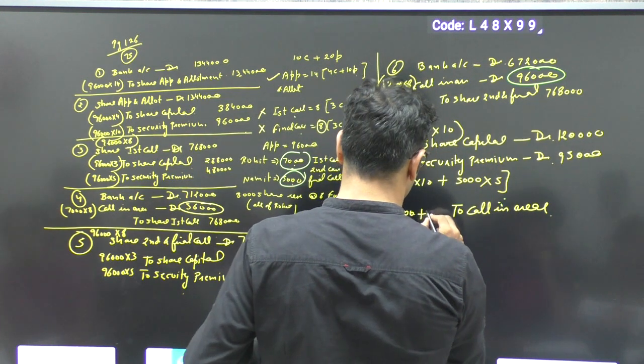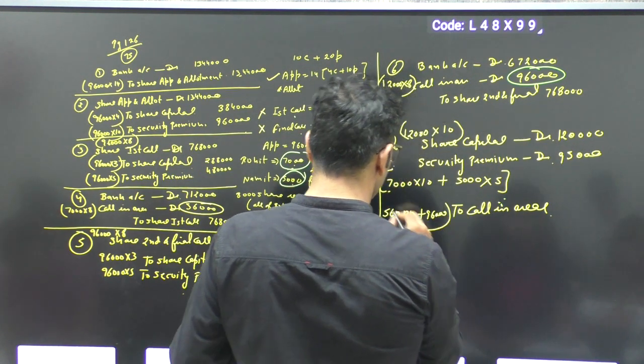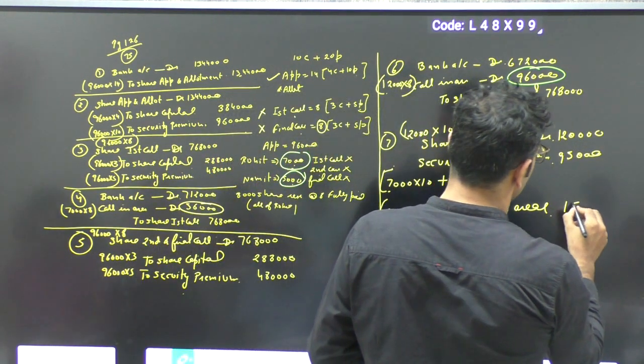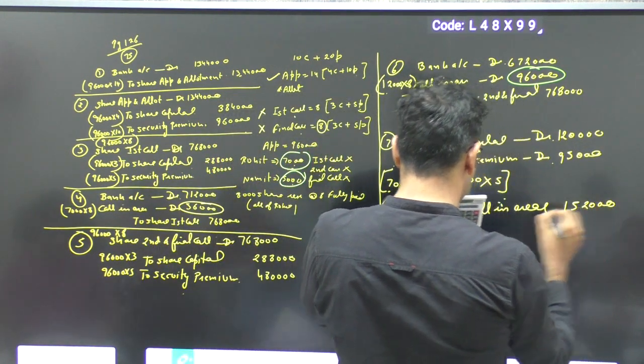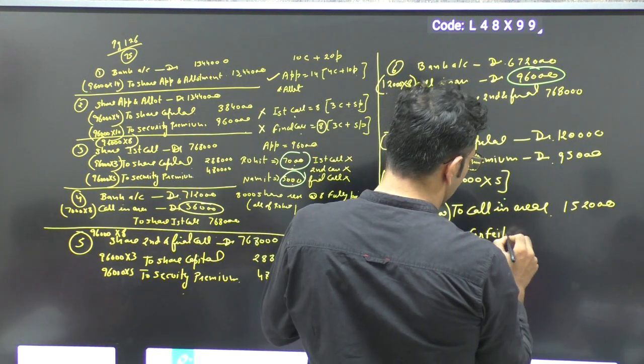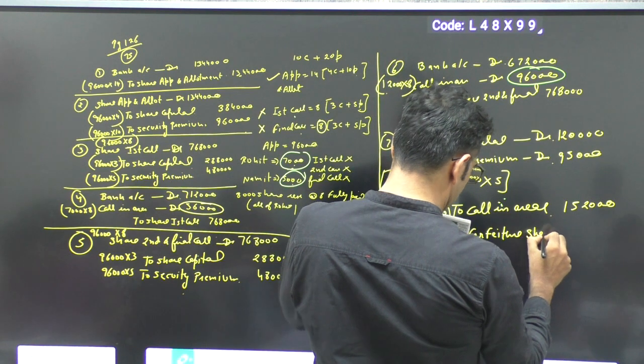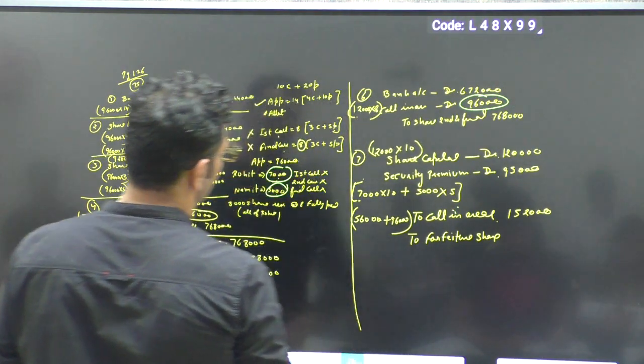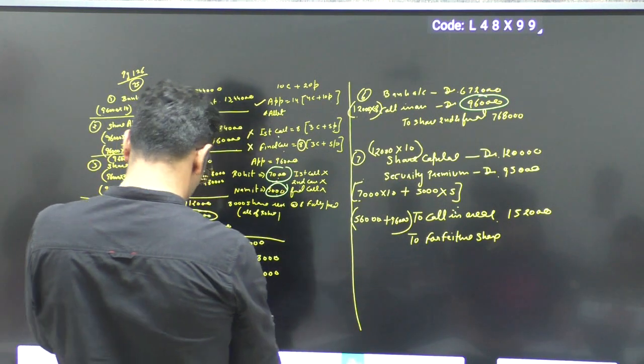And this one is 96. 56 plus 96 equals 152. What will 4 features share? What will get towards capital? What will get towards different?